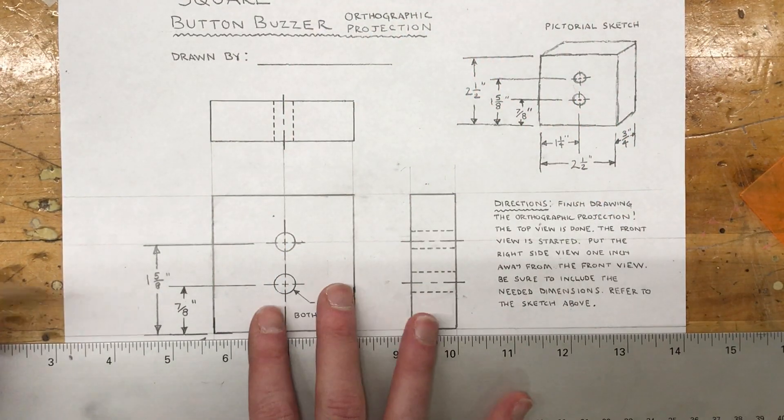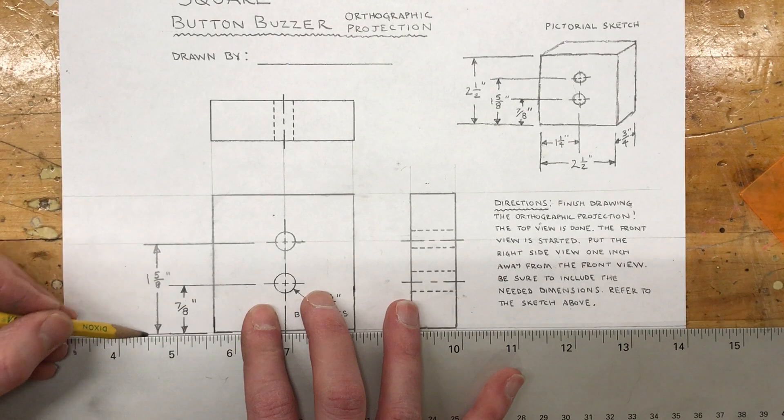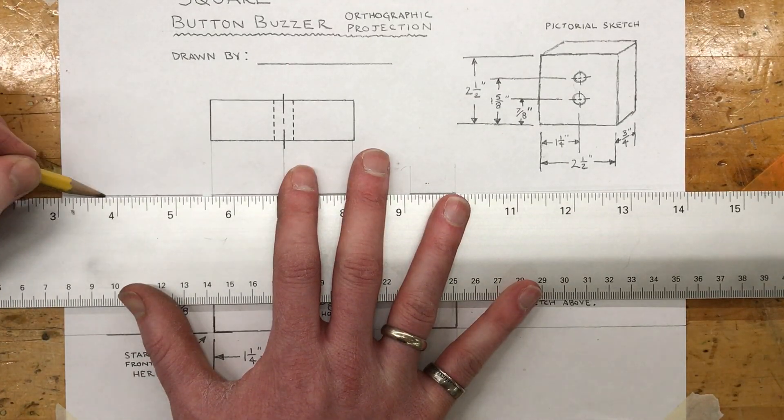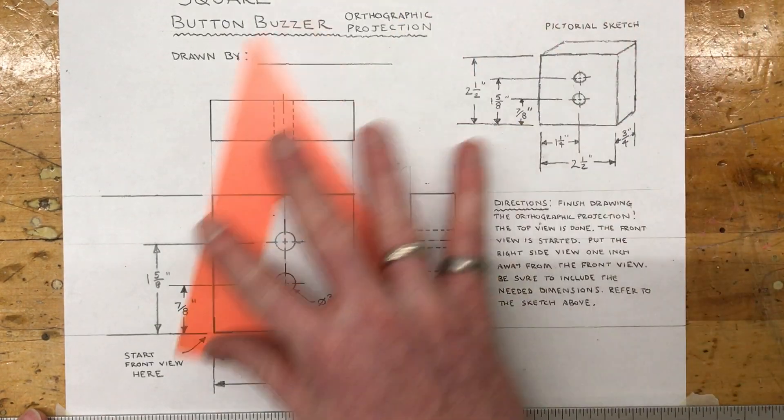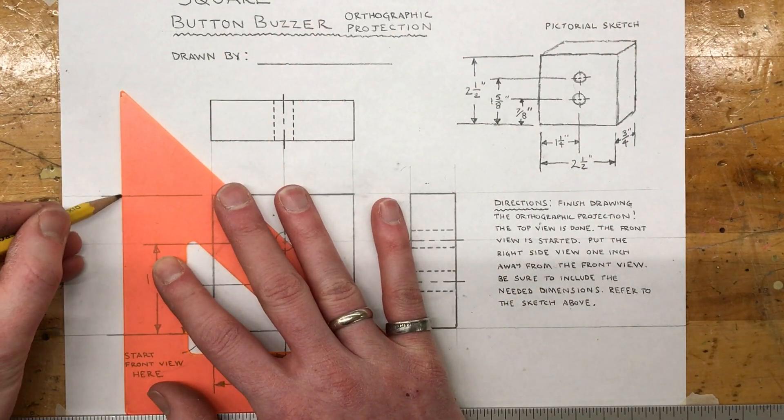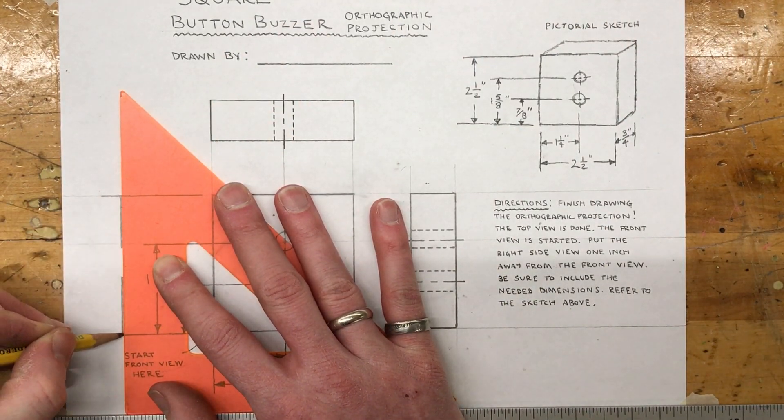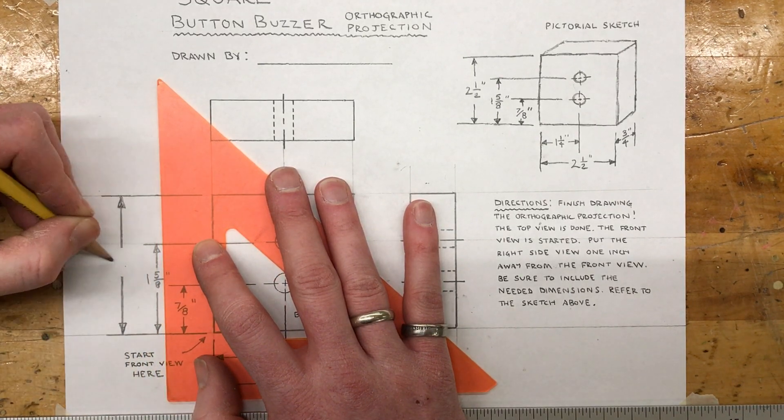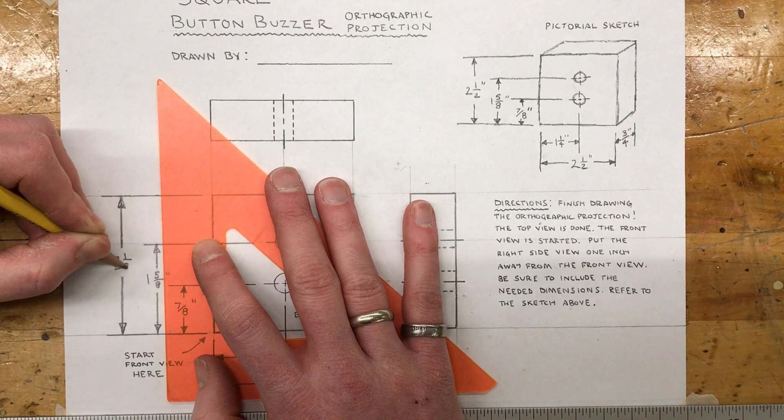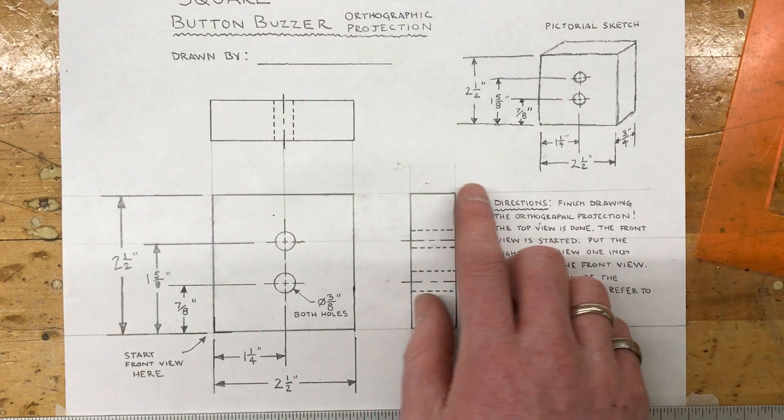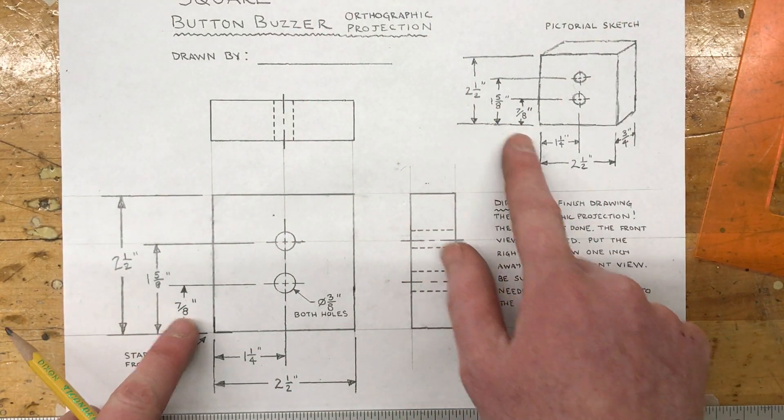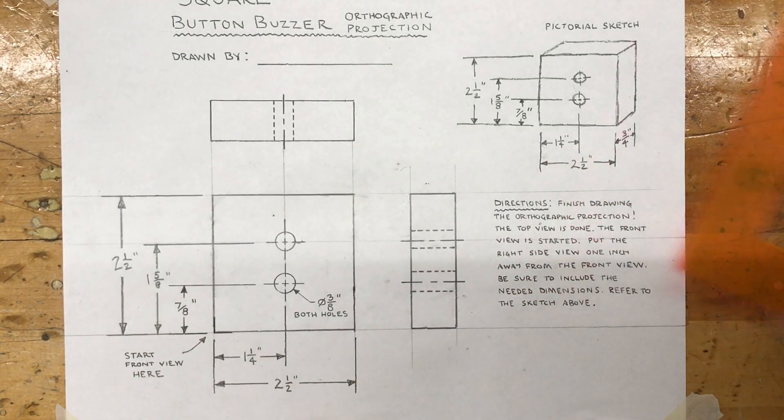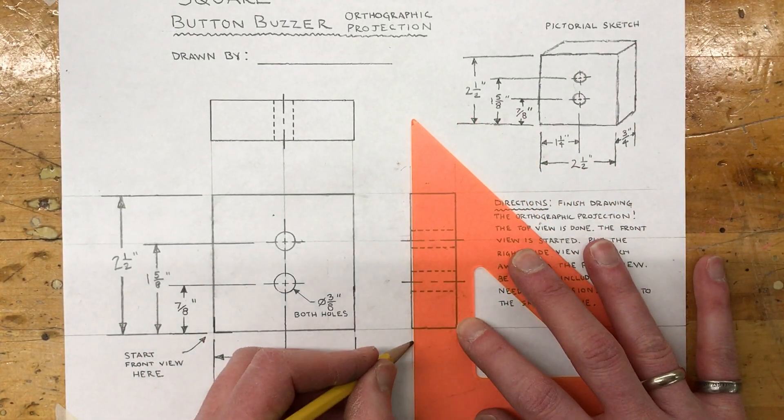The total height is two and a half, so I'm going to extend this line even further, extend the line from the top all the way out to about there, draw my dimension lines in between. That was two and a half inches. So we have two and a half, the one and five-eighths and seven-eighths, one and a fourth, the two and a half. We need to do this three-fourths over here, so in the right side view from the front to the back is three-fourths inches.